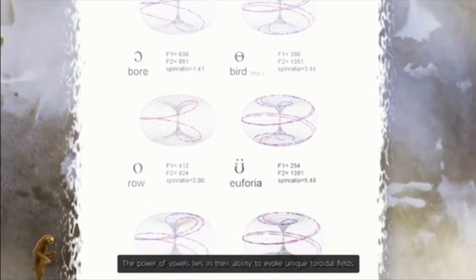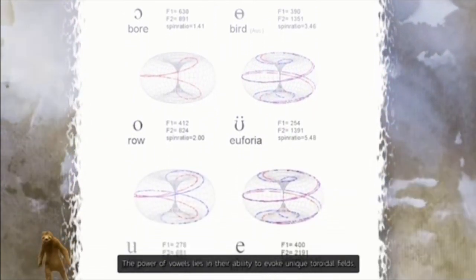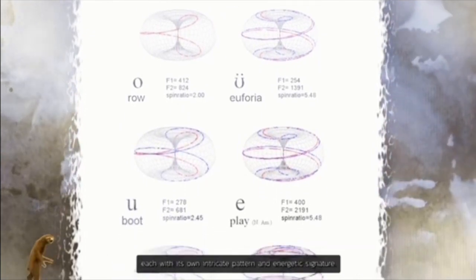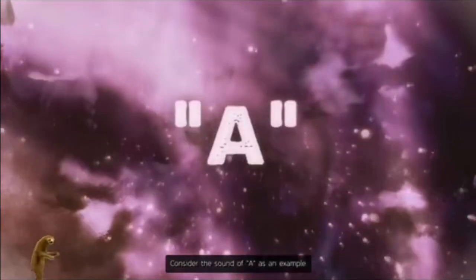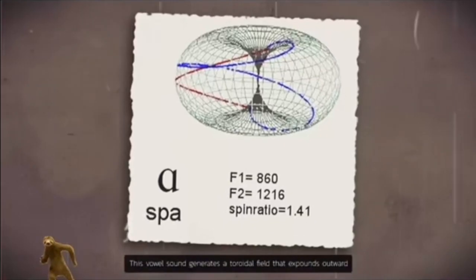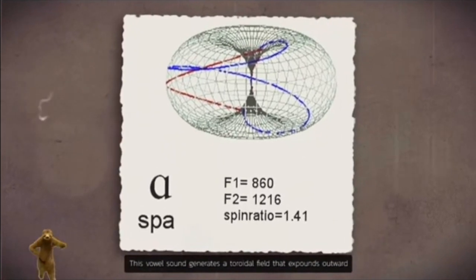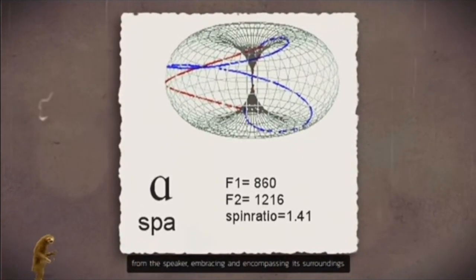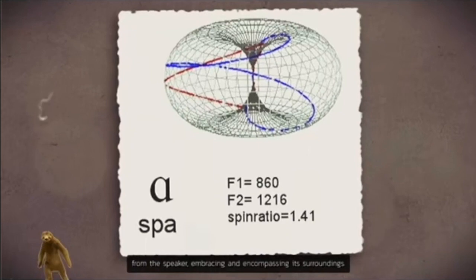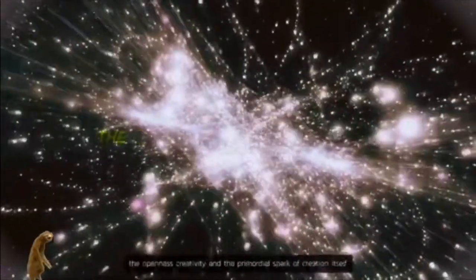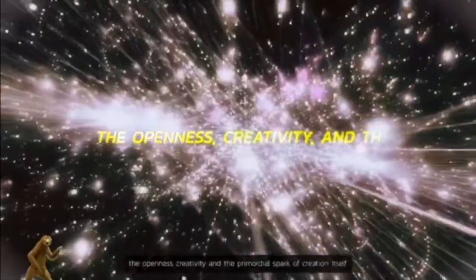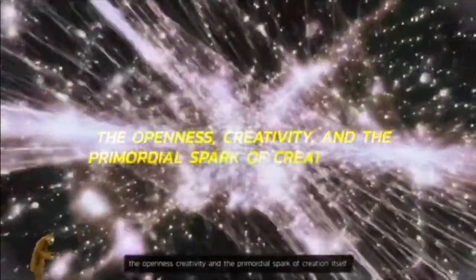The power of vowels lies in their ability to evoke unique toroidal fields, each with its own intricate pattern and energetic signature. Consider the sound of A as an example. This vowel sound generates a toroidal field that expands outward from the speaker, embracing and encompassing its surroundings. It is as if this expansive field signifies the openness, creativity, and the primordial spark of creation itself.